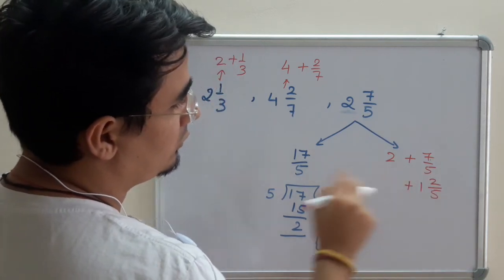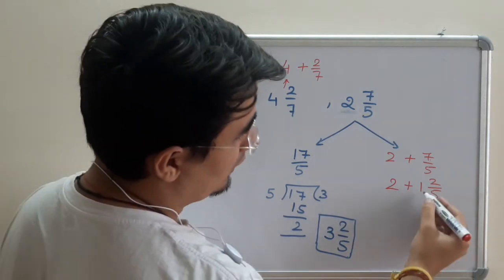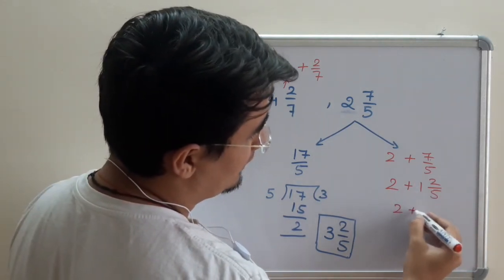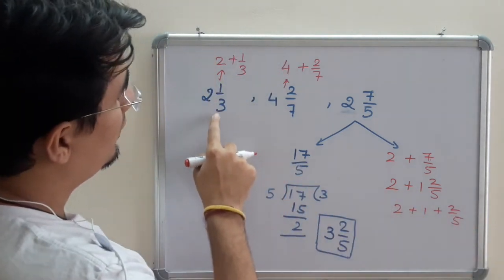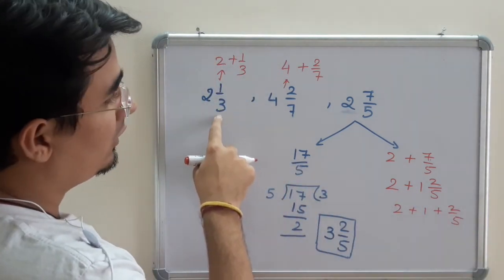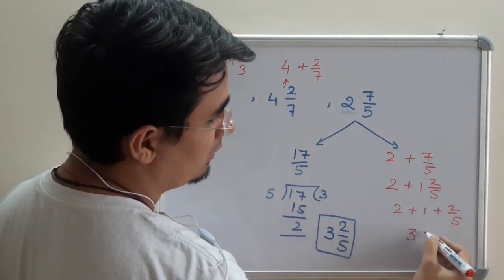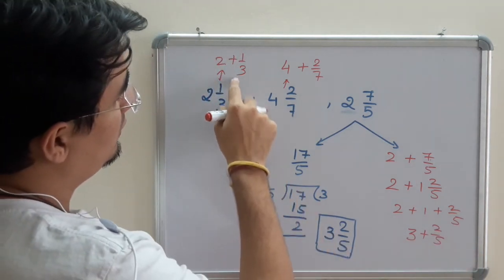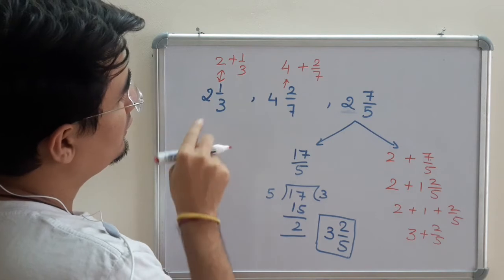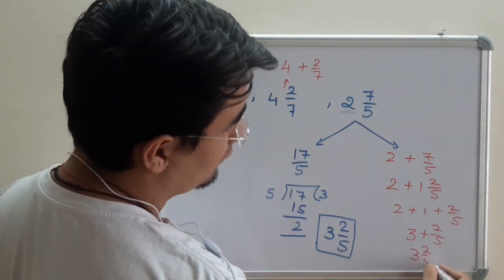Now I can rewrite it as 2 plus 1 plus 2/5. Because any mixed fraction can be written this way. So 2 plus 1 is 3 plus 2/5. So I can write it as 3 2/5. This can be written this way.